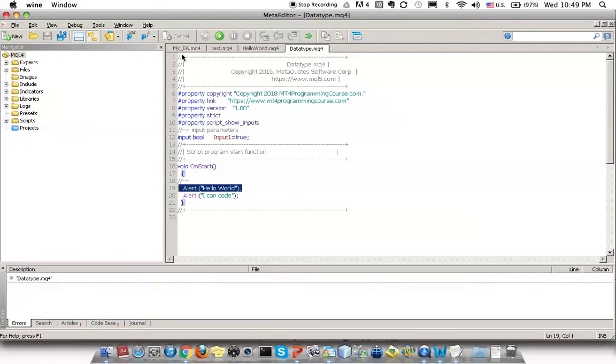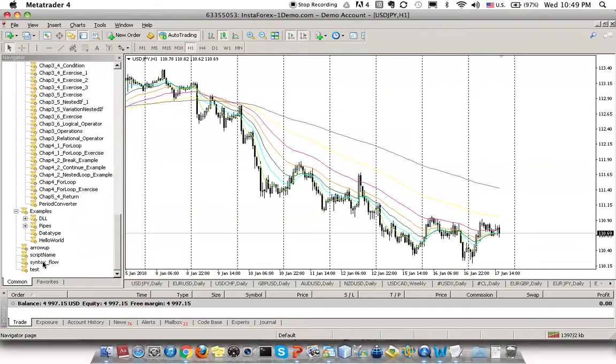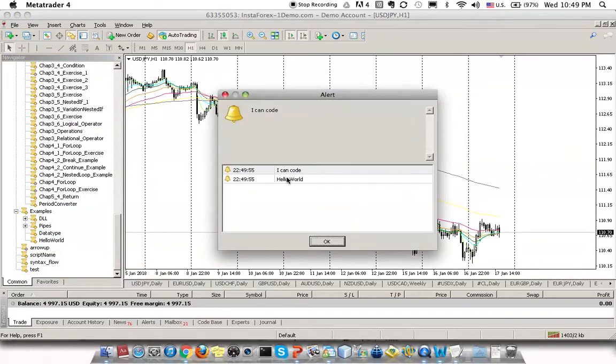All right. So I compile my code and then I go to this one and execute my script. Okay. So this is the pop-up. So as you can see, the pop-up, the first message will be the hello world. So since the hello world is the top messages or top task, then you will execute the first task then followed by the second task. The second task is this I can code.